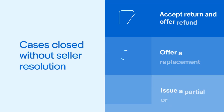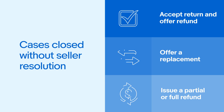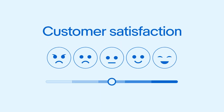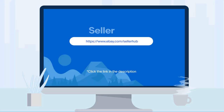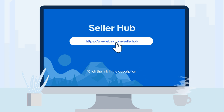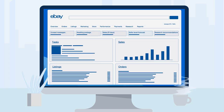Now let's take a look at how to resolve buyer issues. Resolving buyer issues promptly is crucial to prevent cases closed without seller resolution, which impacts your seller level. We know you work hard to ensure a smooth experience for your buyers, but not every order will go perfectly. Here are some important steps to take when buyer issues do come up. Firstly, be sure to regularly check for any new item not received reports or return requests that come through.